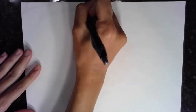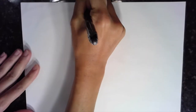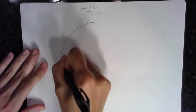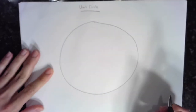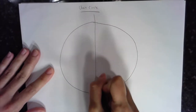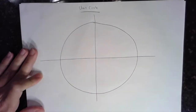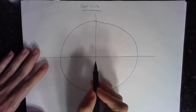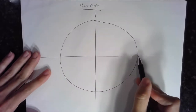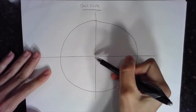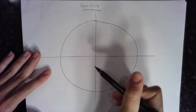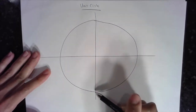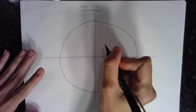Hi everybody, this video is to help quickly memorize the unit circle. The unit circle uses trigonometry — it stands for a circle of radius 1, where the center is at the origin of the x and y axis. The radius is one, which means the distance from the center to any point on the circle is one.